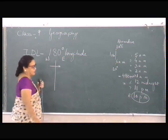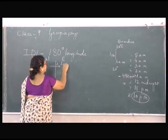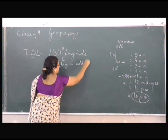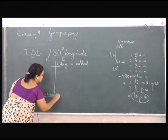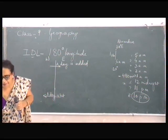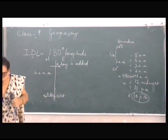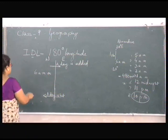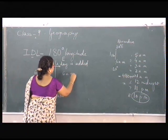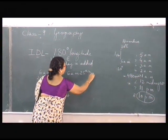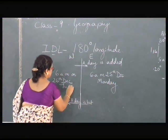When you are traveling towards the east, you are gaining a day. A day is added. When we are traveling towards the west, a day is lost or subtracted. You will mention 6 am on 26th December on one side, and this will be 6 am 25th December. This is Monday and Tuesday. The calculations will not be asked; you just need to remember this basic information.